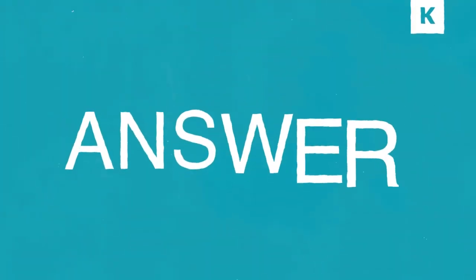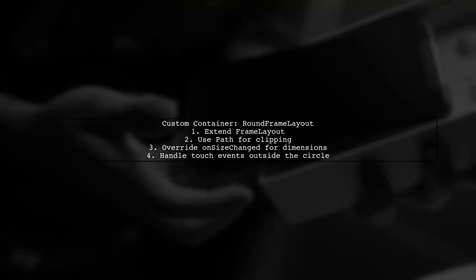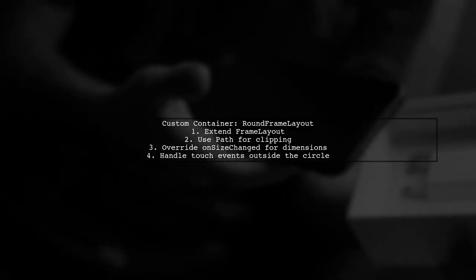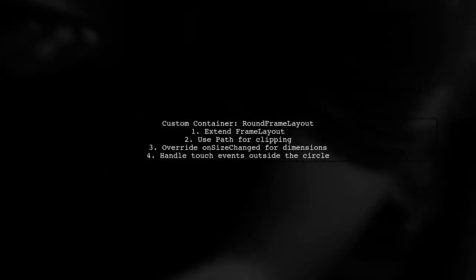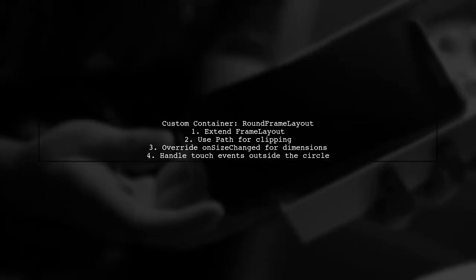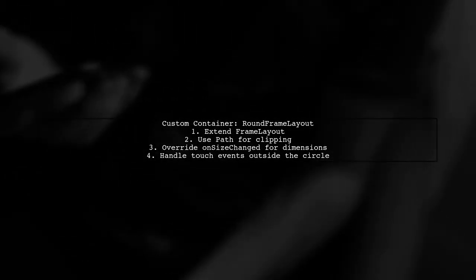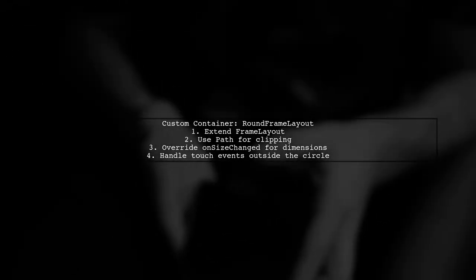Let's now look at a user-suggested answer. To display ExoPlayer in a circular shape, you need to create a custom container called RoundFrameLayout. This class extends FrameLayout and uses a clipping path to achieve the circular effect. In the RoundFrameLayout class, you define the position and radius for the circular clipping.